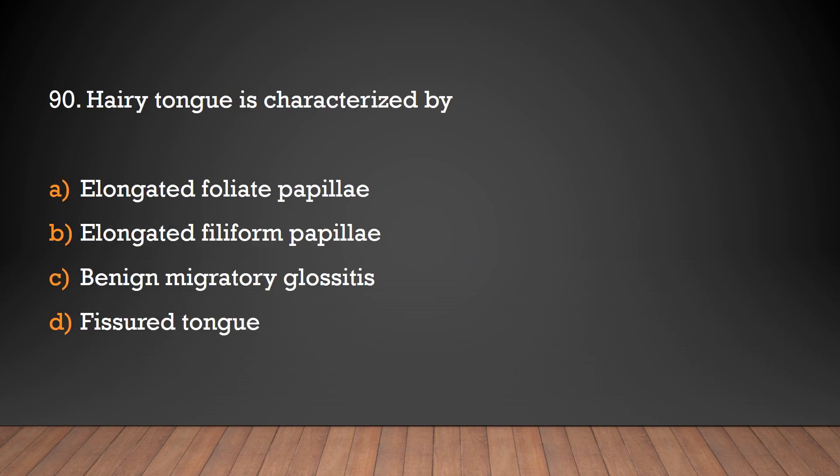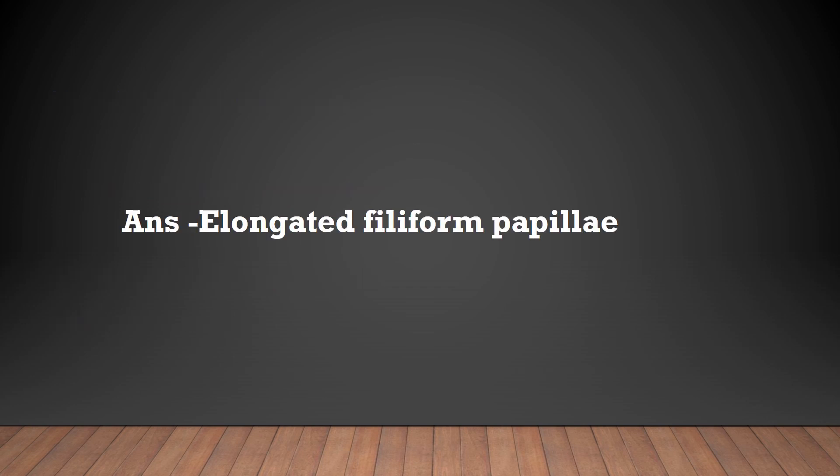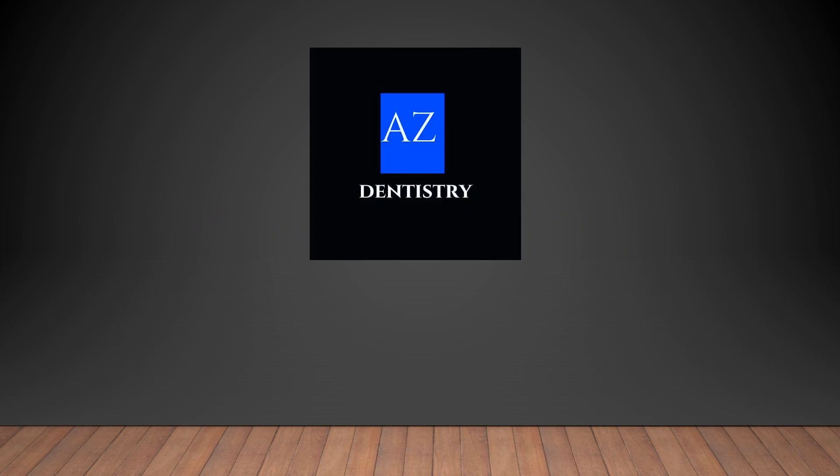Hairy tongue is characterized by: elongated foliate papillae, elongated filiform papillae, benign migratory glossitis, or fissured tongue? The answer is elongated filiform papillae. That's all for today's topic — see you with a new video, thank you.